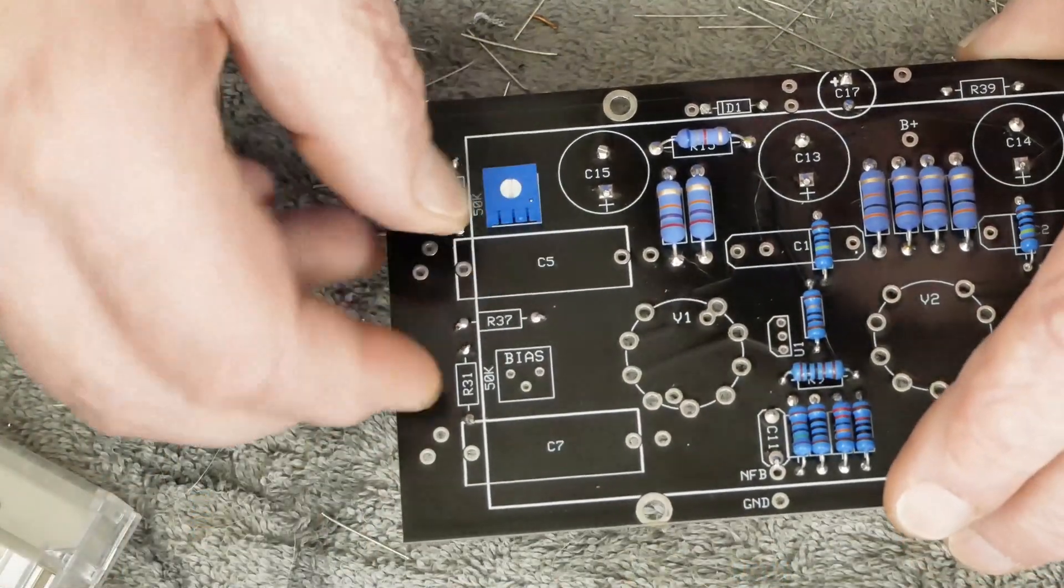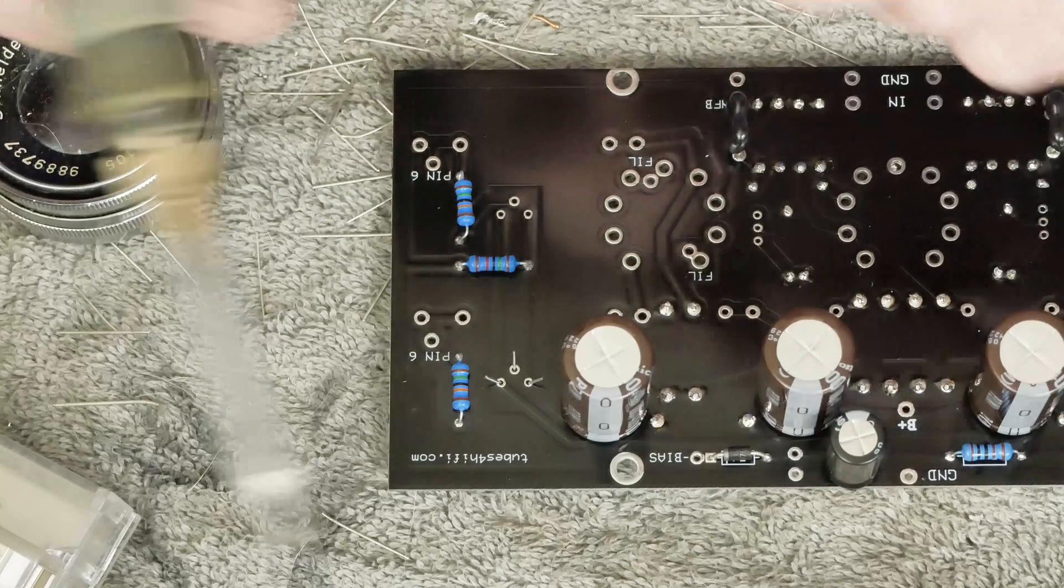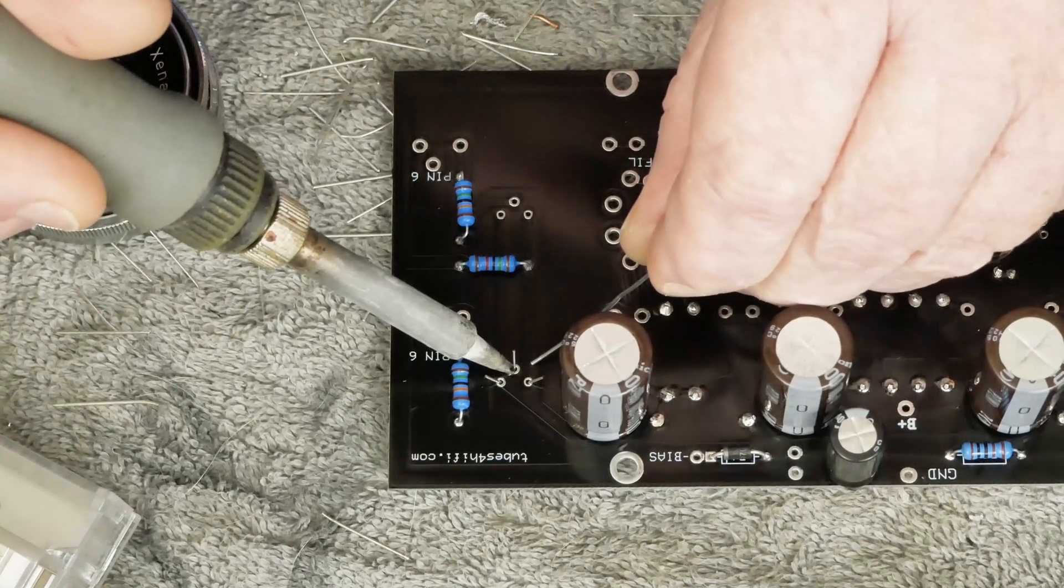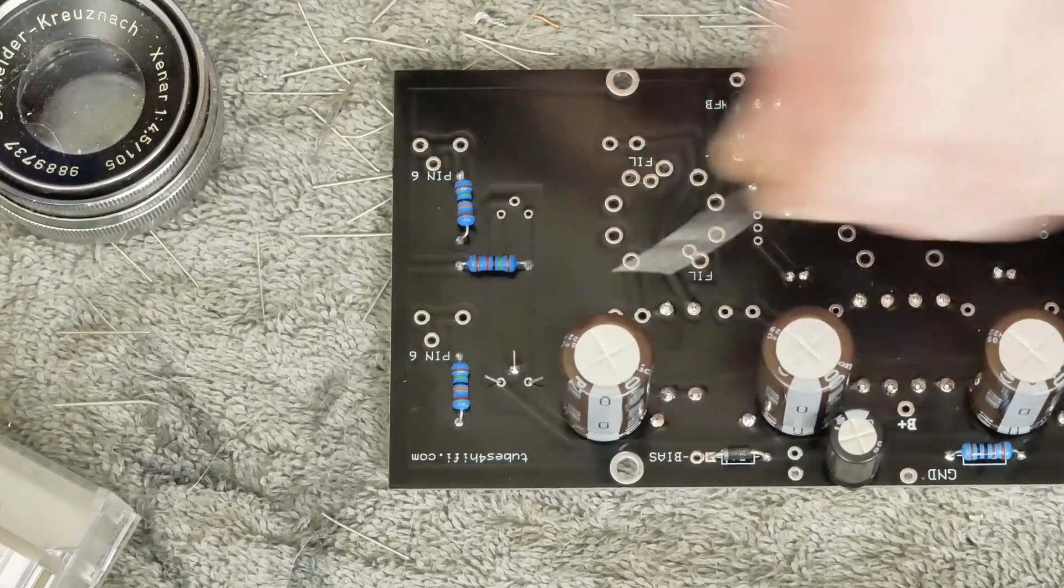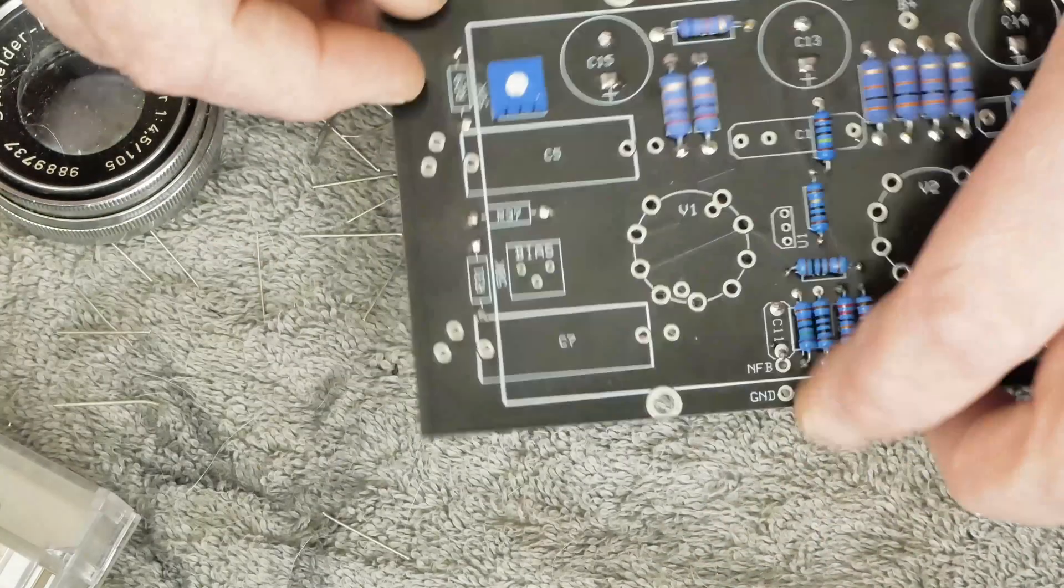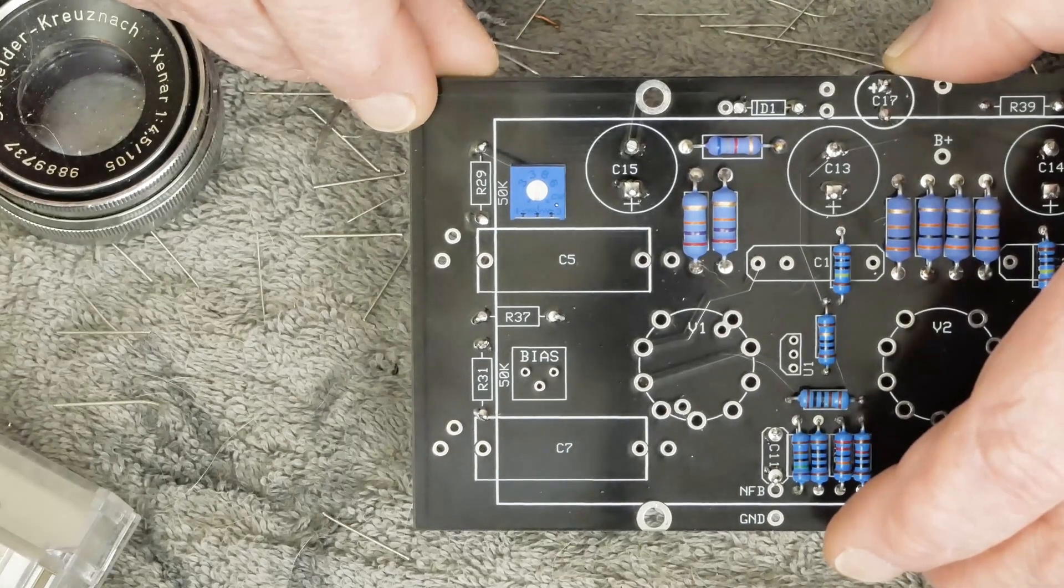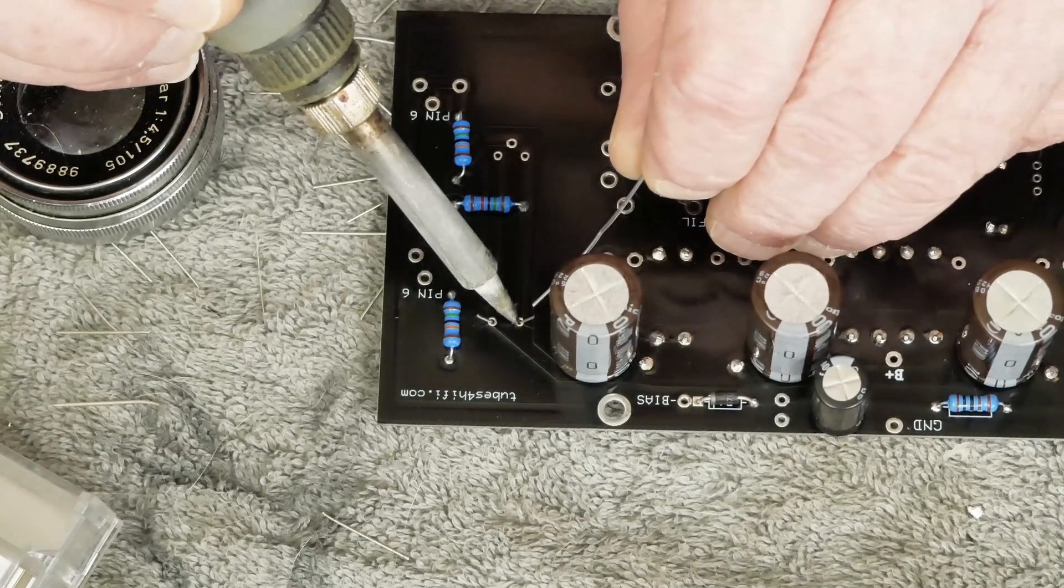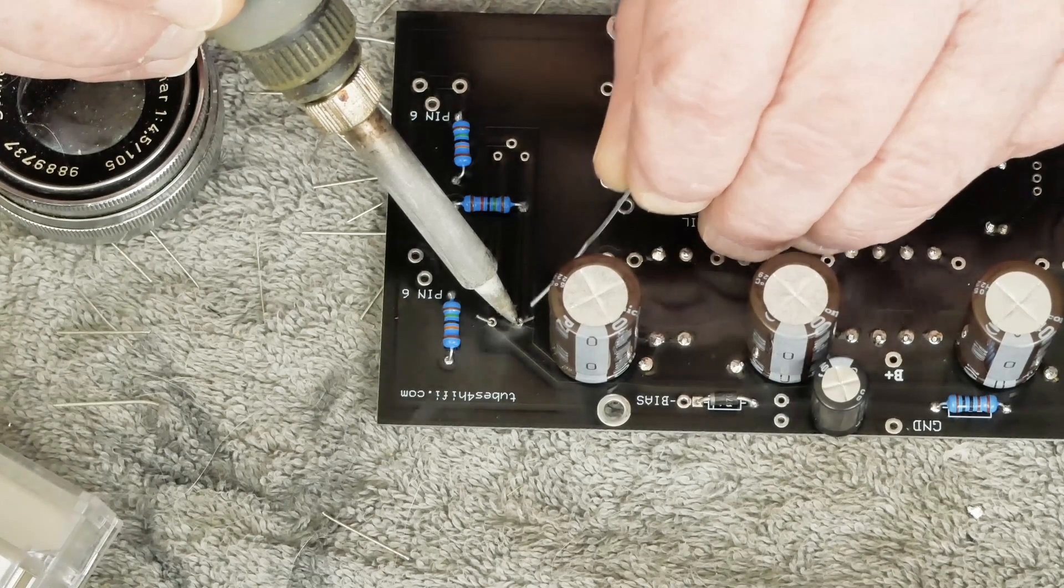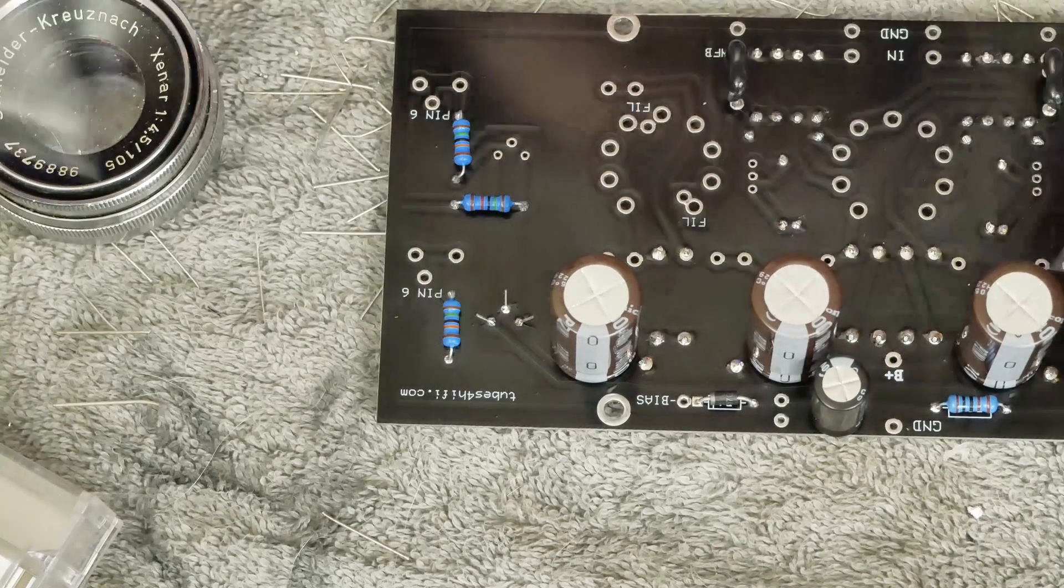So, the next thing we're going to do is solder these little bias pots in place. You hold it in place, and then bend the leads over on the back side so that it'll stay nice and flush. And then we'll start by soldering this center pin. Then turn the board over. Make sure it's square on the board. And then solder the other two.